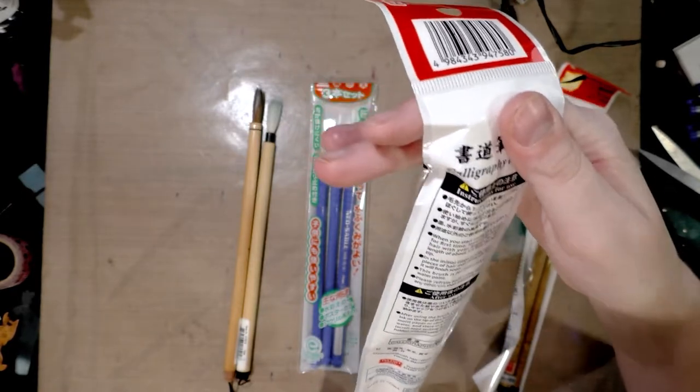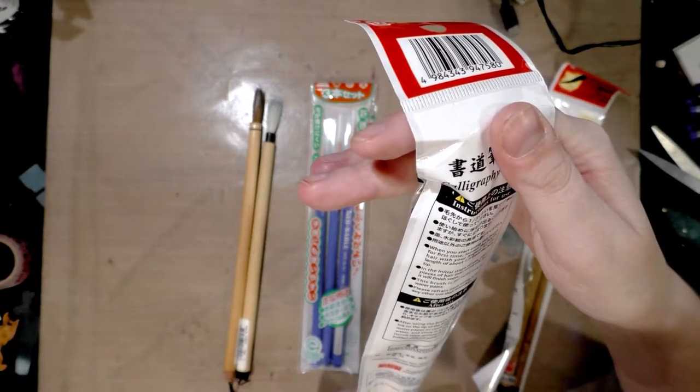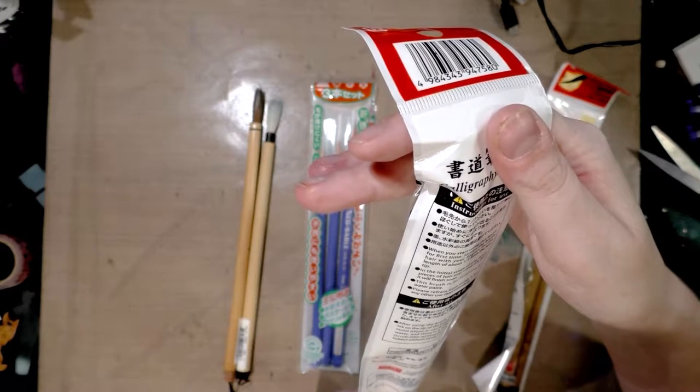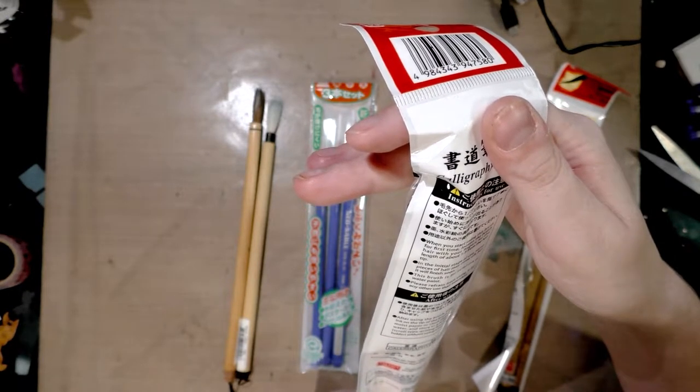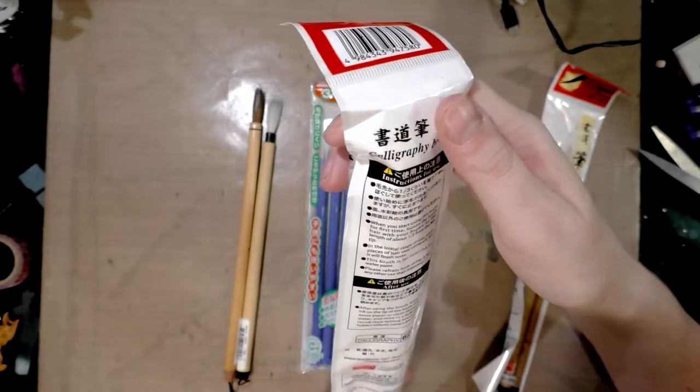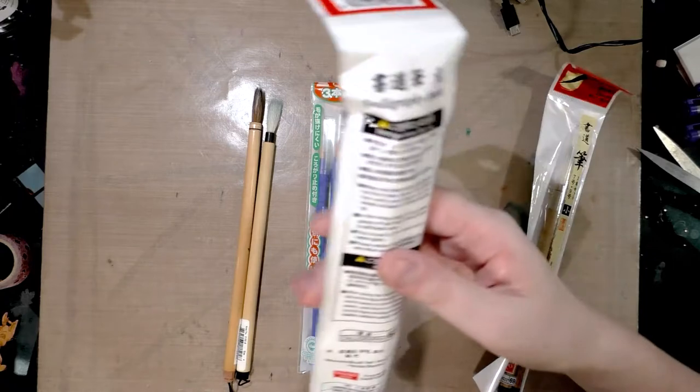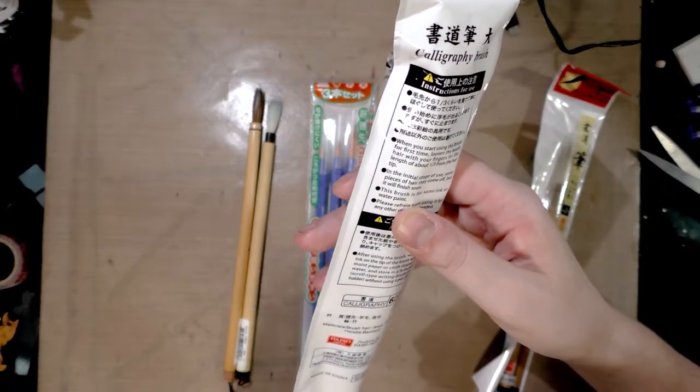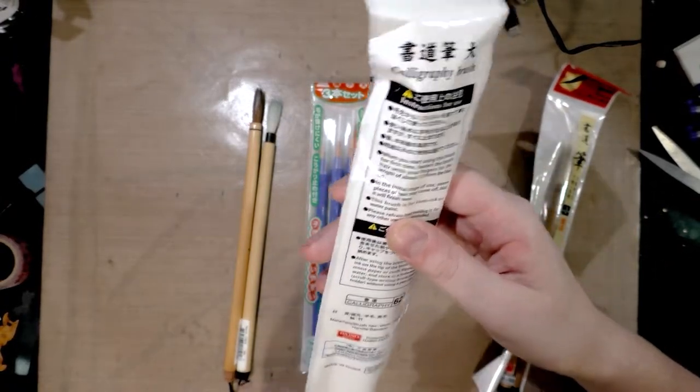After using the brush, wipe off ink from tip of brush with a moist paper or cloth dipped in water. Store in a scroll type writing brush holder without using a cap. And this is wool and horse and the handle is bamboo.